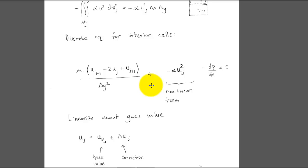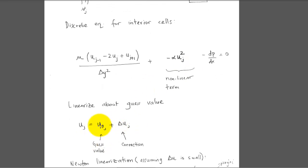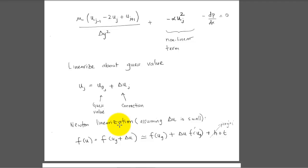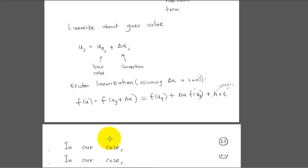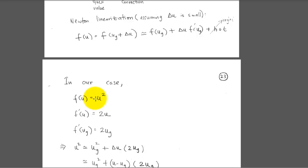To solve this, we linearize about a guess value. We write u_j as some guess value plus a correction δu. We linearize using Newton linearization, assuming δu is small. For a function f(u), we expand it in a Taylor series: f(u_guess + δu) ≈ f(u_guess) + δu·f'(u_guess), neglecting higher-order terms proportional to δu² and higher. In our case, f(u) = u², so f'(u) = 2u.